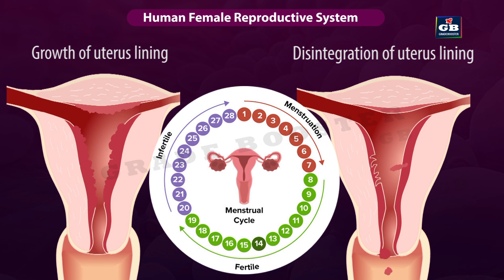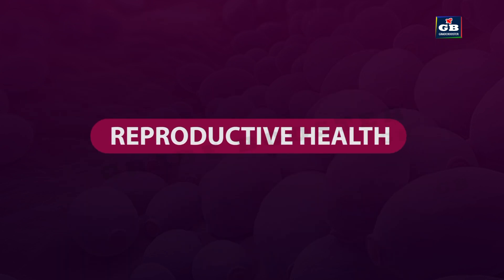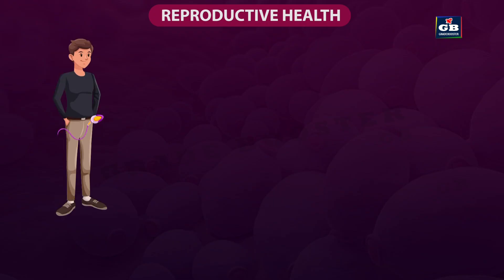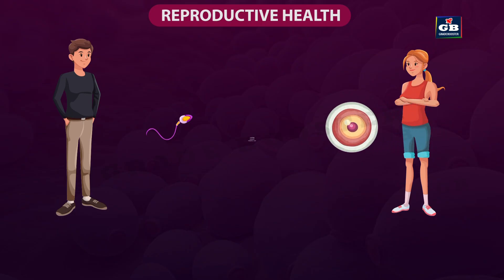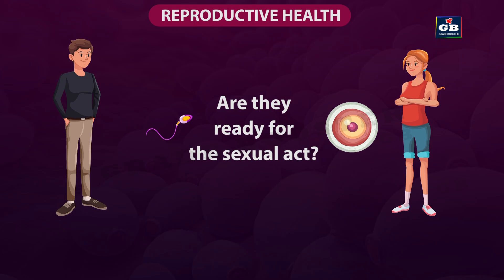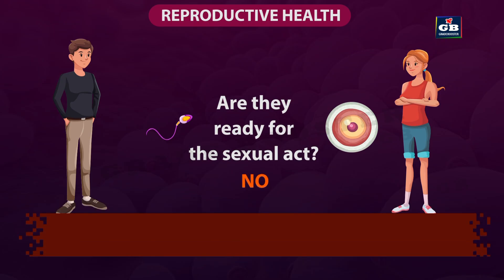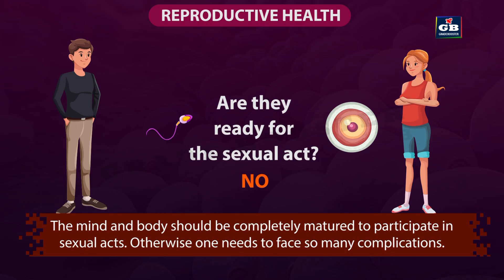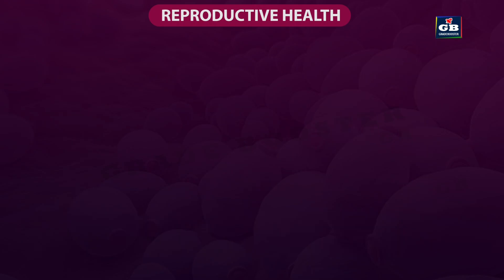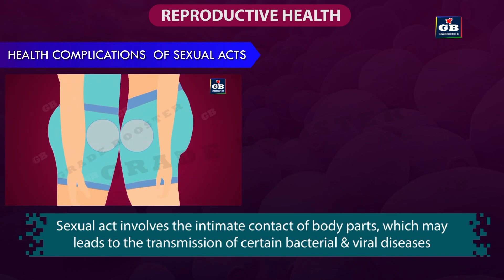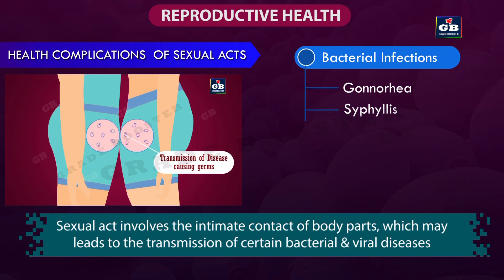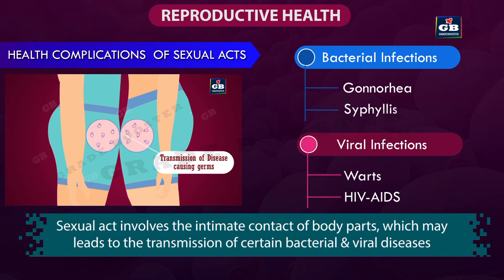This is all about the female reproductive system. A boy has the capability of producing sperm cells, and the production of ovum has started in a girl — but does it mean they are ready for sexual acts to produce babies? No. The mind and body should be completely matured to participate in sexual acts, otherwise one needs to face many complications. Sexual acts involve intimate contact of body parts, which may lead to transmission of certain bacterial diseases like gonorrhea and syphilis, and viral infections such as warts and HIV AIDS.